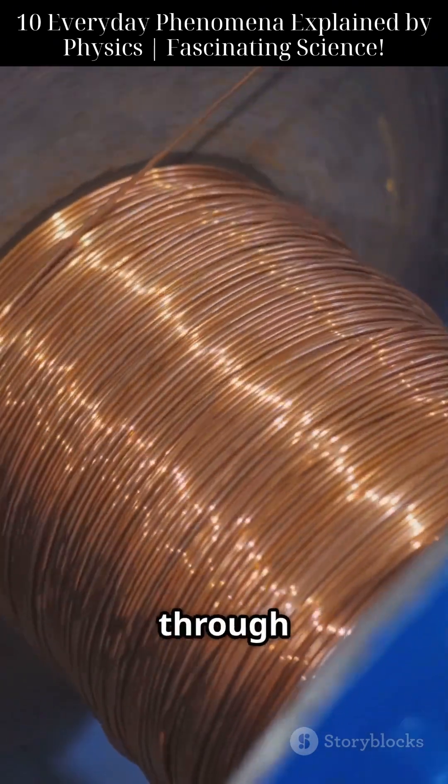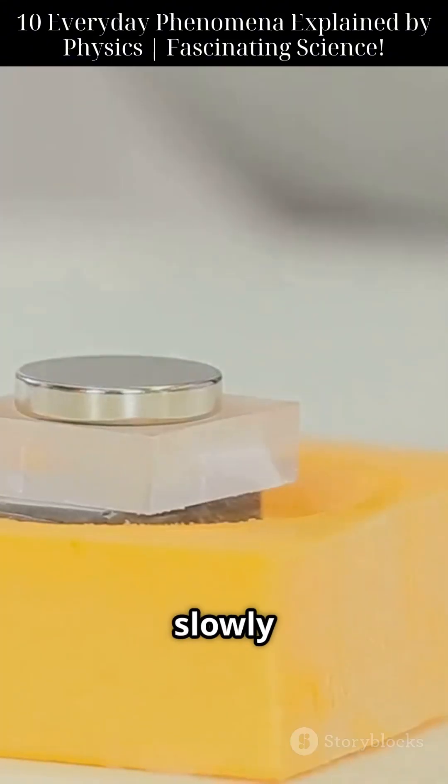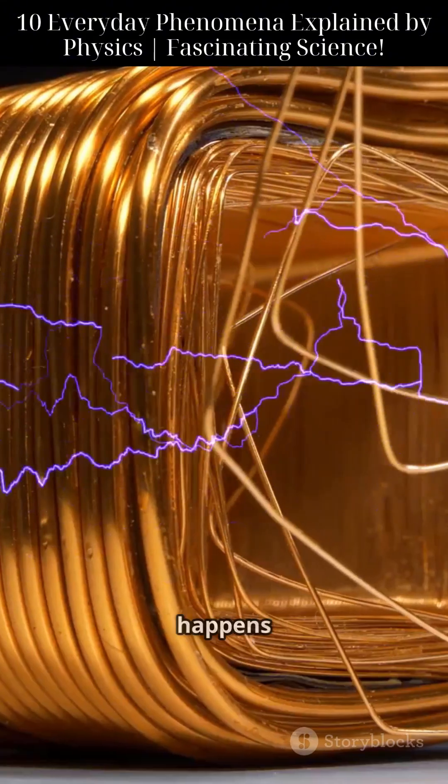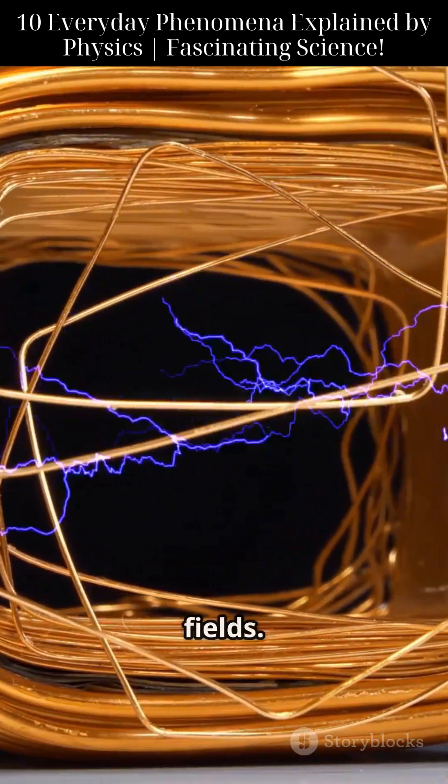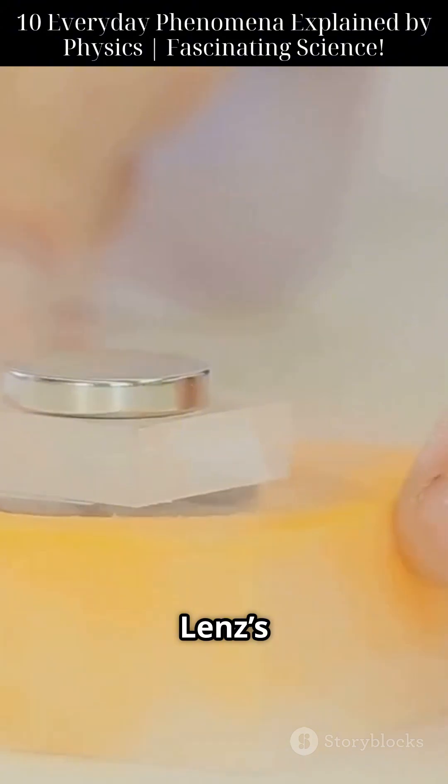Here's a fun one, drop a magnet through a copper pipe. It falls slowly instead of free falling. This happens because the moving magnet induces an electric current in the copper, creating opposing magnetic fields. You're witnessing Lenz's law in action.